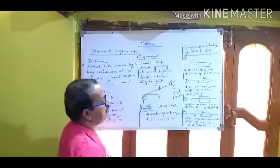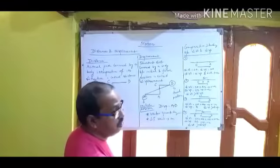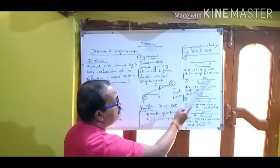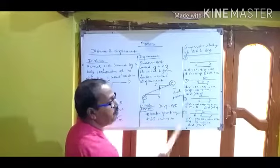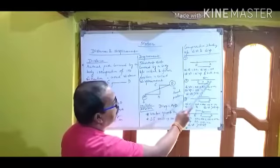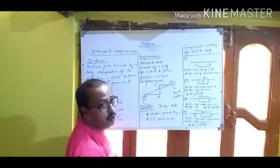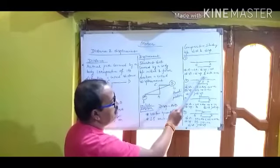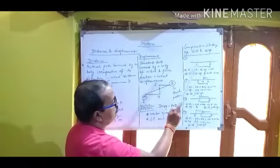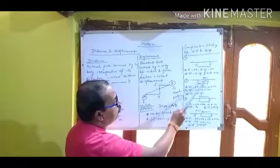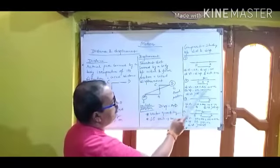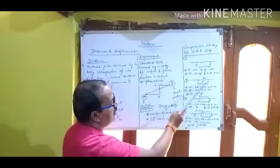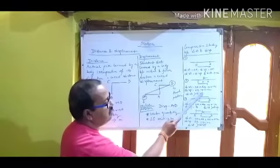In the second case, O is the origin. The body starts from O, goes to A first, then returns and comes to B. The distance covered is OA plus AB, which is positive. For displacement, O is the initial position and B is the final position, so displacement is OB, also positive since B is to the right of the origin. In this case, distance is greater than displacement.